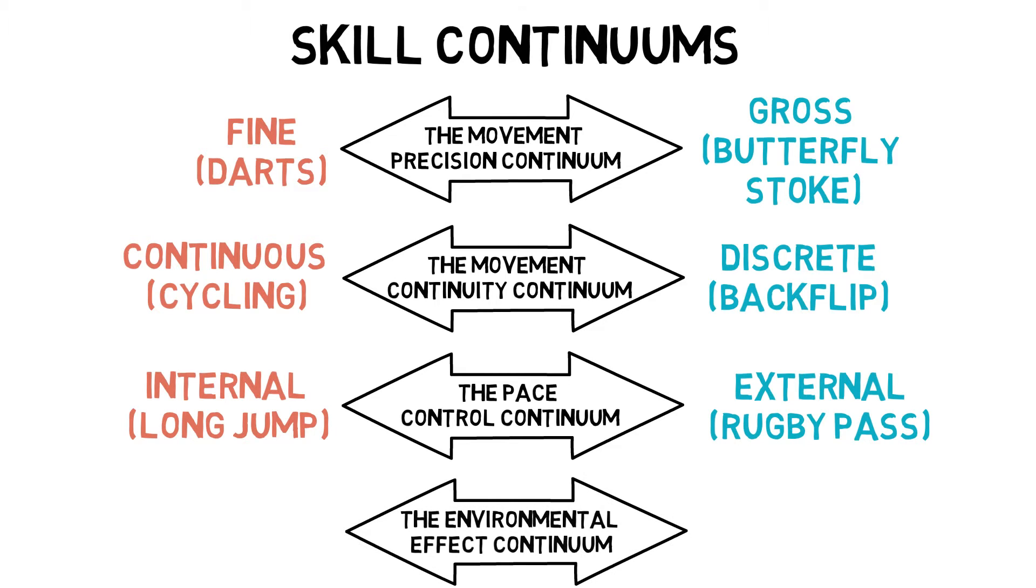And the environmental-effect continuum. Open skills, which are unpredictable such as a football pass, and closed skills, which are predictable such as a javelin throw.